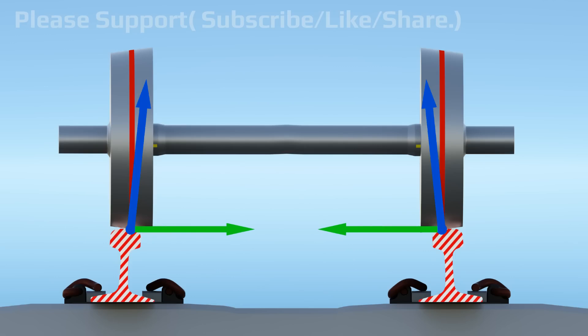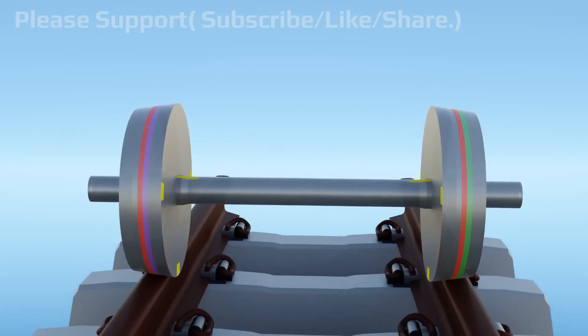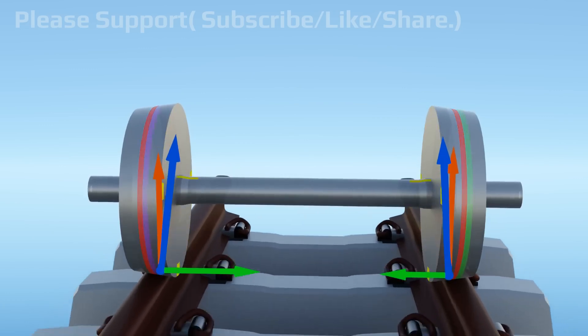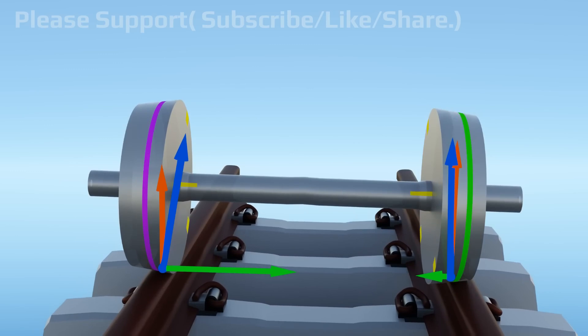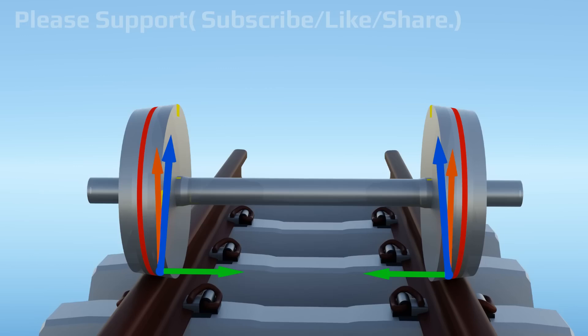While rolling straight, if the wheel set shifts a little bit on the left side, then wheel reaction force direction will change due to changes in contact slope. Now horizontal reaction component on left side wheel will increase and on the right wheel it will decrease. So net horizontal force will be acting towards right. This force will help to shift the wheel back to normal position.